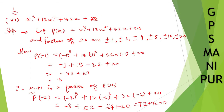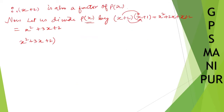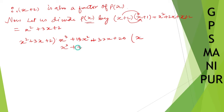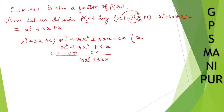p of x is x cubed plus 13x squared plus 32x plus 20. Dividing: x squared into x gives x cubed, 3x into x gives plus 3x squared, 2 into x gives plus 2x. Subtracting: x cubed cancels, 13 minus 3 is 10x squared, 32 minus 2 is plus 30x, and 20 comes down, so plus 20.